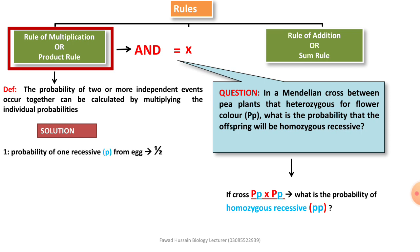Solution की तरफ आते हैं। पहला point है: probability of one recessive P from egg. समझो कि जो भी offspring बनता है genetic combination में, उसमें half contribution egg का होता है और half contribution sperm का होता है। तो पहले point में बताया गया है कि probability of recessive from egg कितना है — वो half है। And probability of one recessive from sperm —